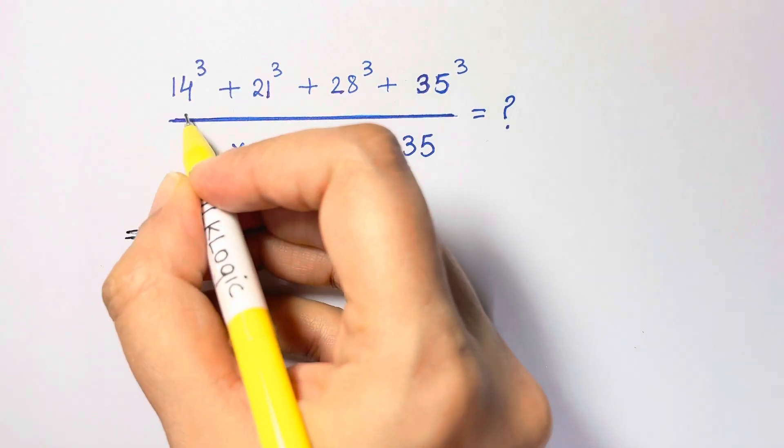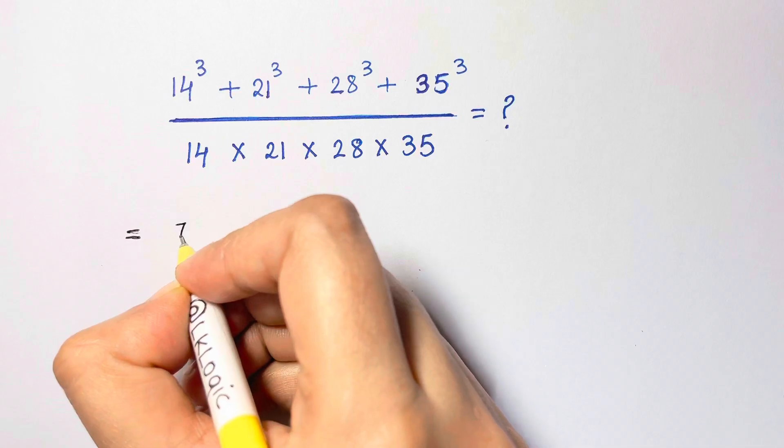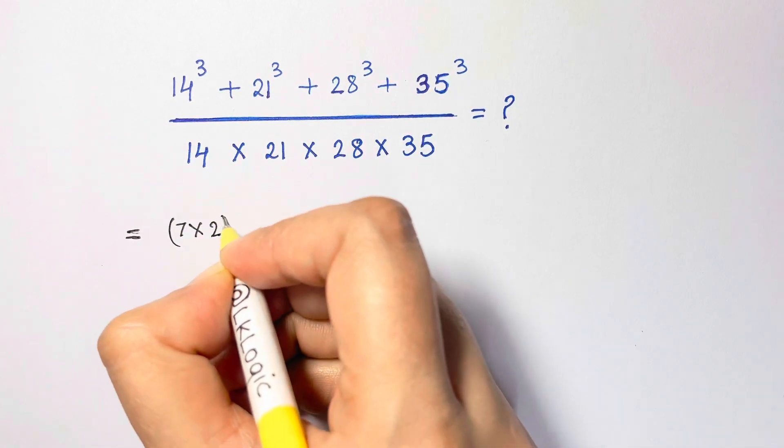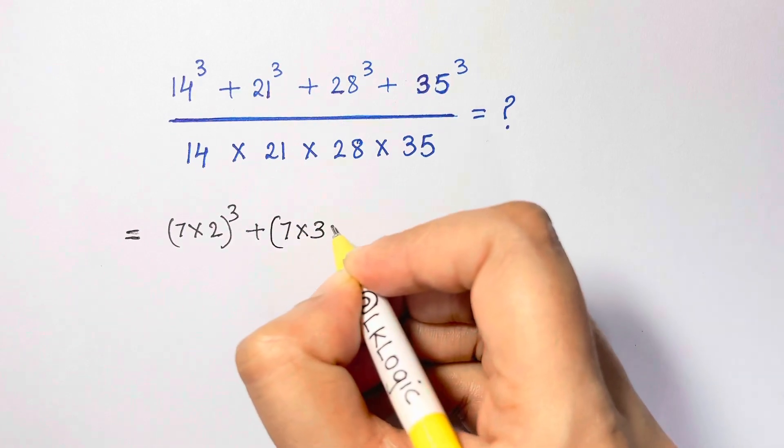Just write all these terms in terms of 7. 14 is 7 times 2 the whole cube, plus 7 times 3 the whole cube.